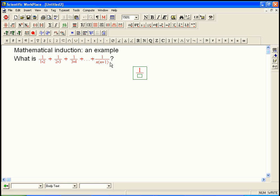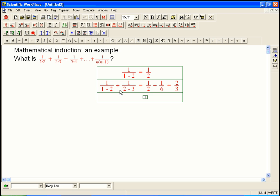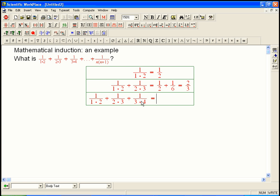1 over 1 times 2 obviously is 1 half. What about the sum of the first two? Well let's see, we could do it just sort of brute force, 1 half plus 1 sixth, and that turns out to be 2 thirds.